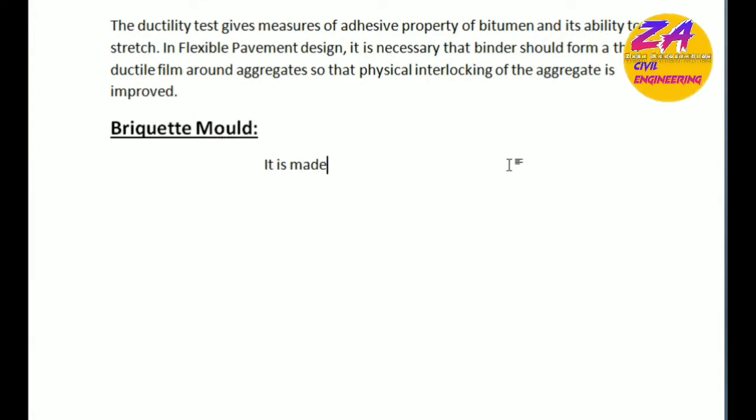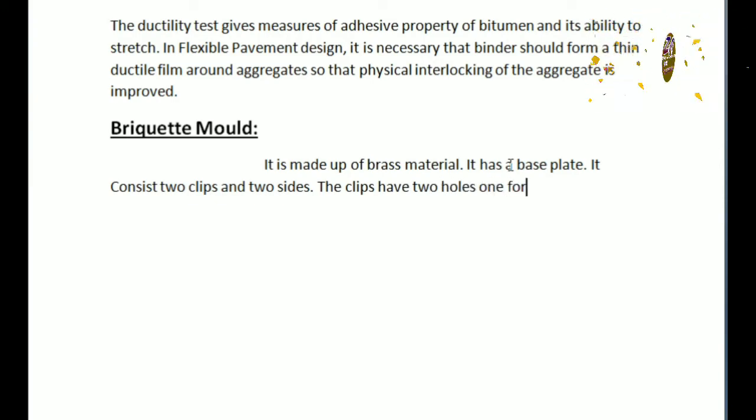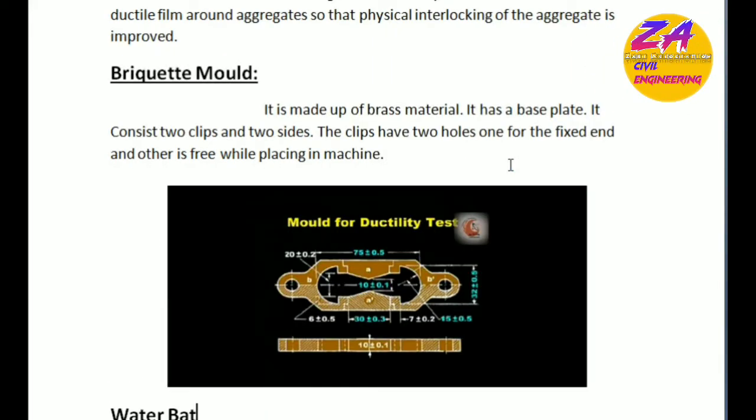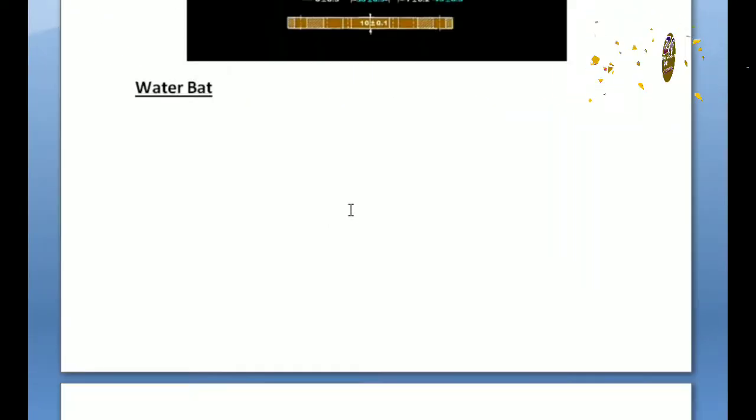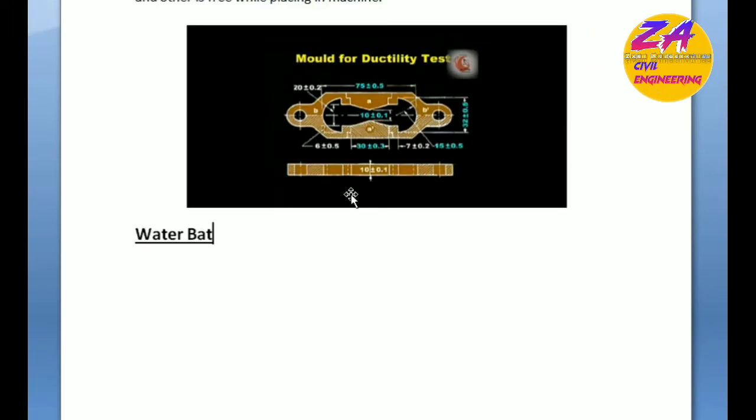Next is the briquette mold used in this experiment. The briquette mold is made up of brass material. It has brass plates, consists of two clips and two sides. The clip has two holes: one for the fixed end and the other is free for placing in the machine. That is the ductility apparatus briquette mold.